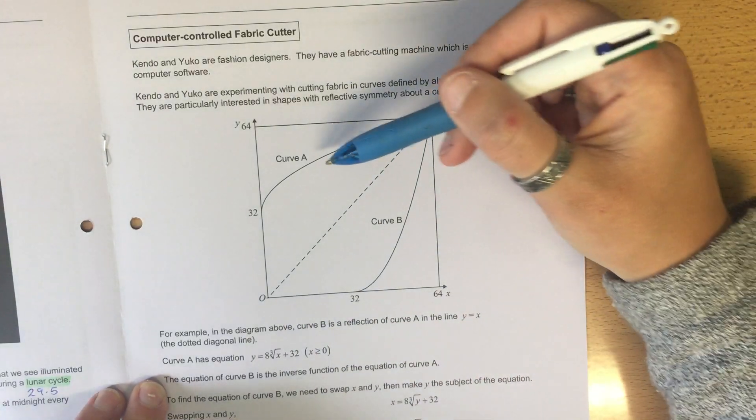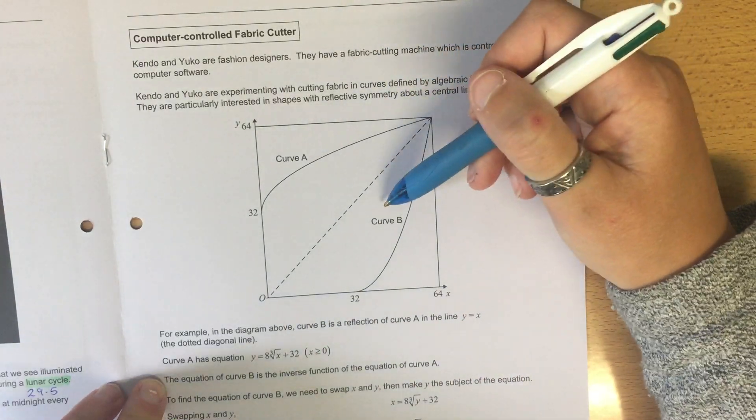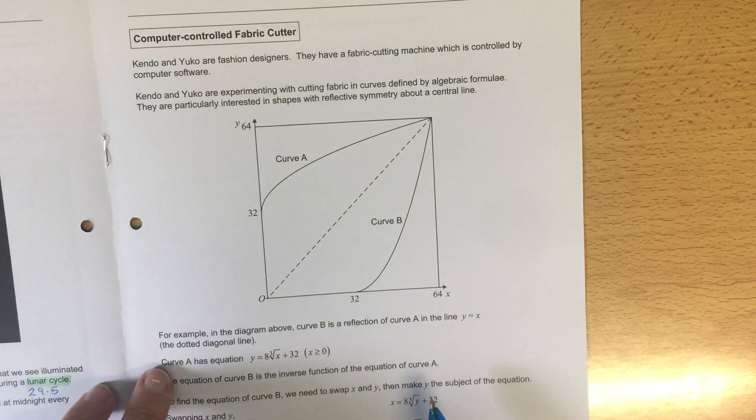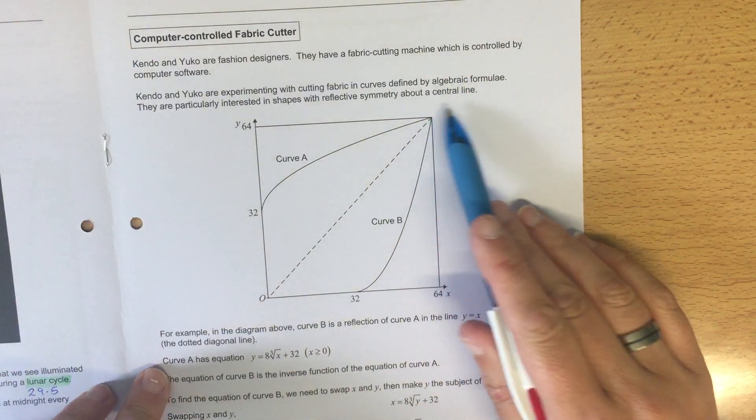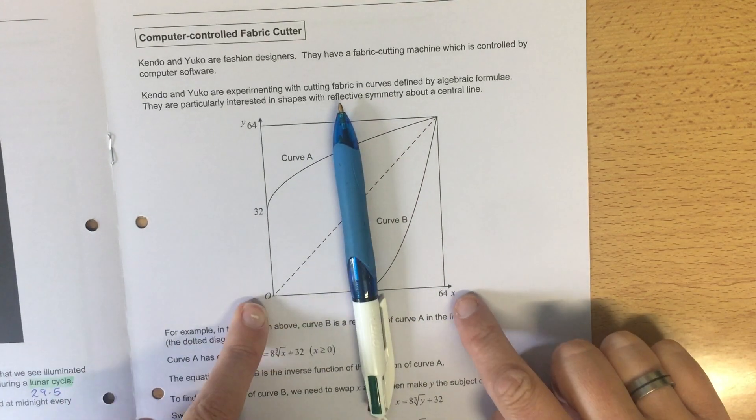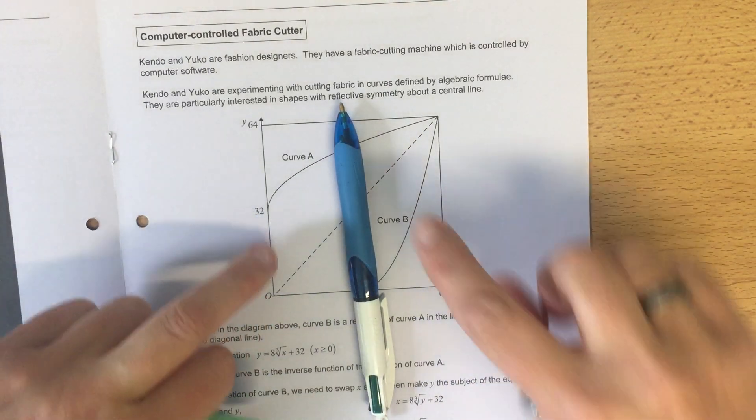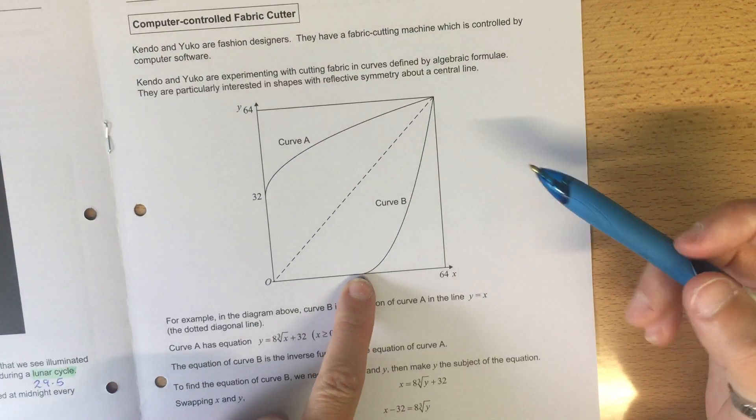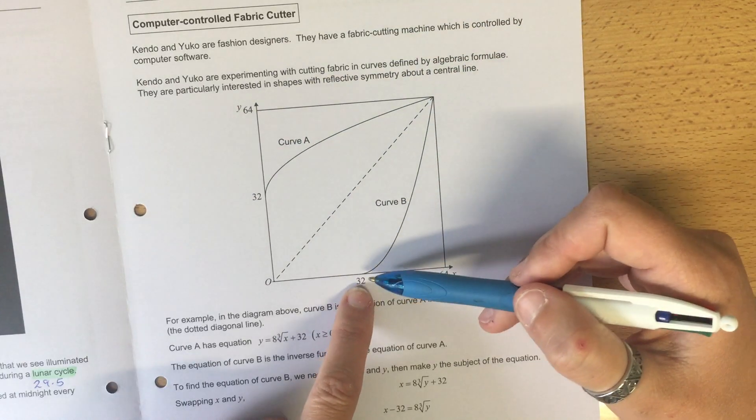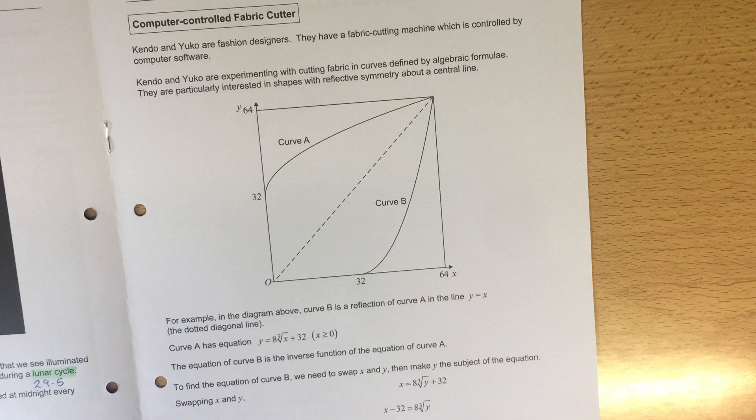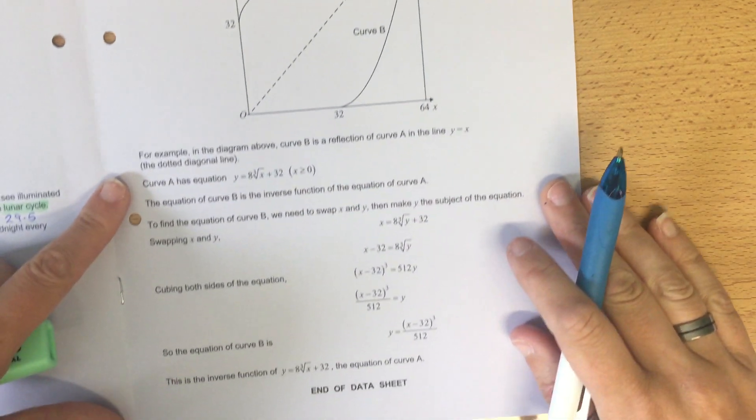These two will always be the inverse of each other. The other bit they're talking about is a central line, so potentially that could be when x equals 32, or if we're going that way, when y equals 32. We're looking at this - it could potentially be a parabola with a root at 32. They then give us a demonstration.